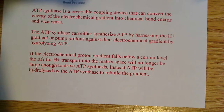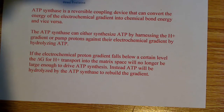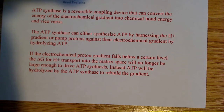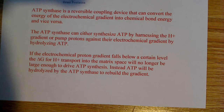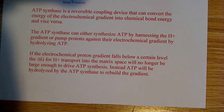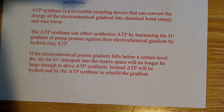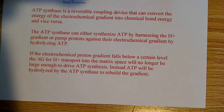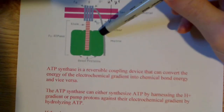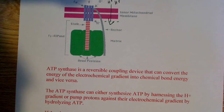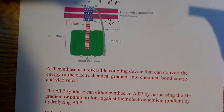If the electrochemical proton gradient falls below a certain value, the delta G — the free energy for proton transport into the matrix space — will no longer be large enough to drive ATP synthesis. Instead, ATP will be hydrolyzed by the ATP synthase to rebuild the gradient. So this enzyme will hydrolyze ATP and rebuild the gradient.